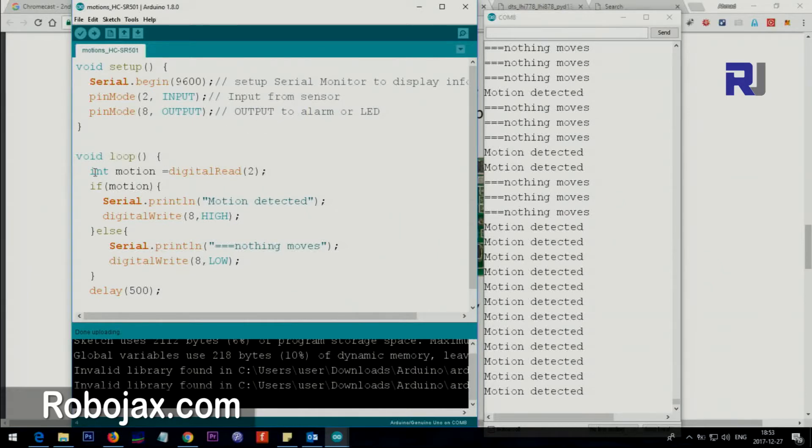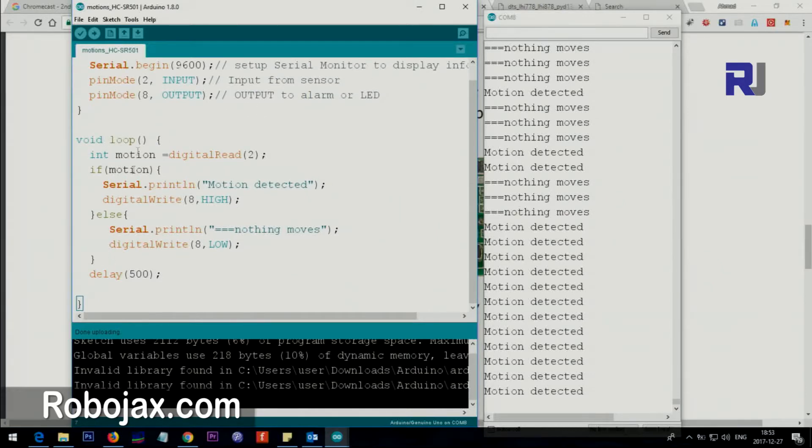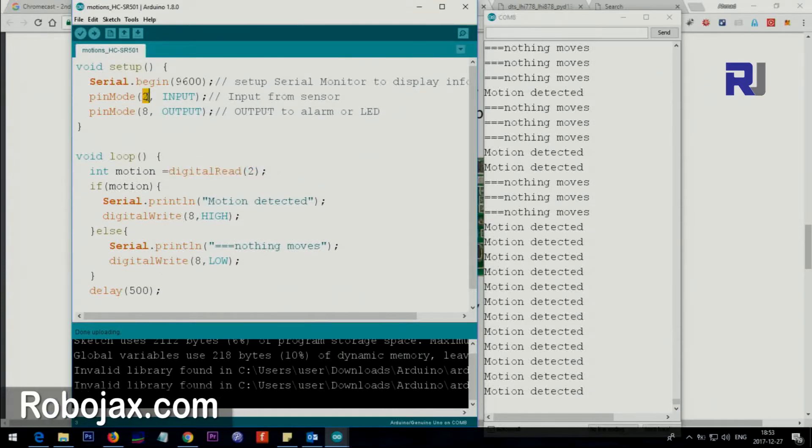This is the loop, the main loop that goes and checks it. Digital read will read pin 2 that we set here as an input. This reads pin 2 and puts the result in motion. This variable, integer, holds either one or zero. One means detection, zero means nothing. Here we say if motion—we could also do if motion equals equals one, but if motion equals one means if motion is one.